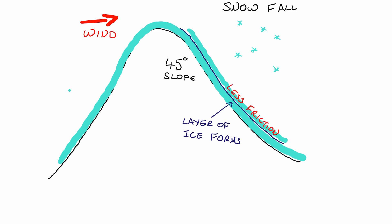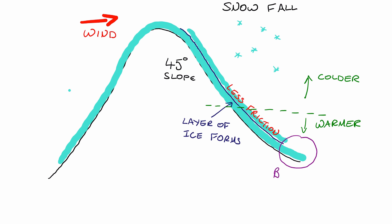What happens is that this alternating colder and warming will create less friction between the two layers and it can also cause a little bit of melting. And this less friction is likely to cause the top layer of the snow to slide off the side of the mountain and therefore creating an avalanche.